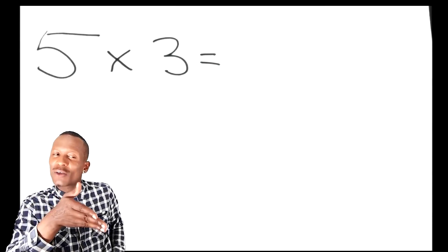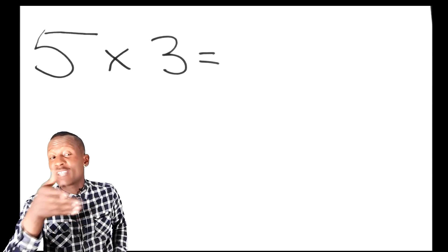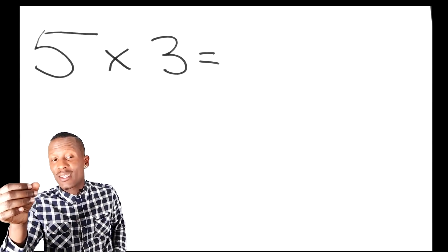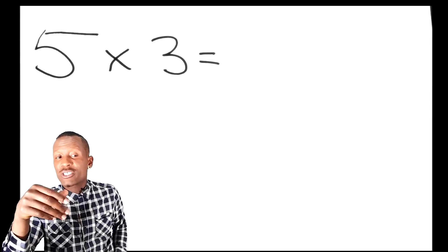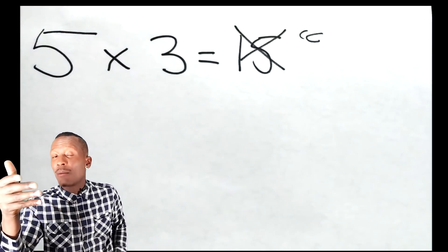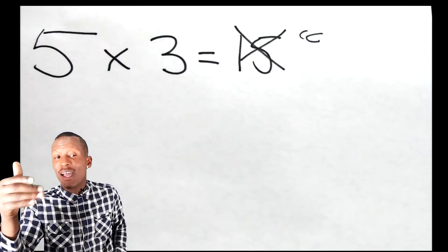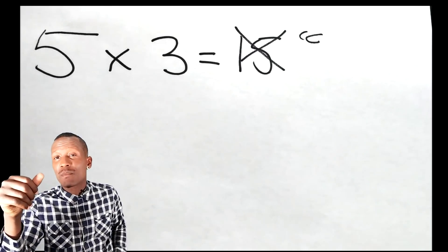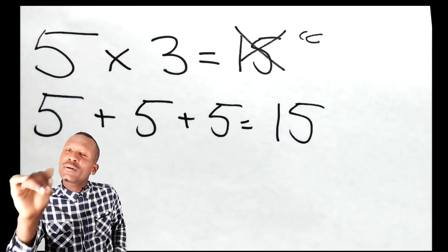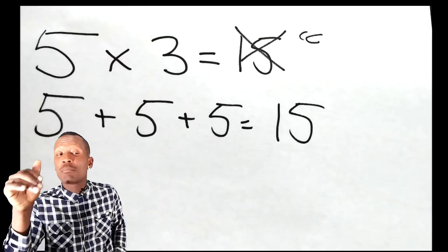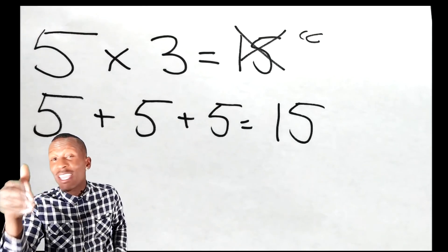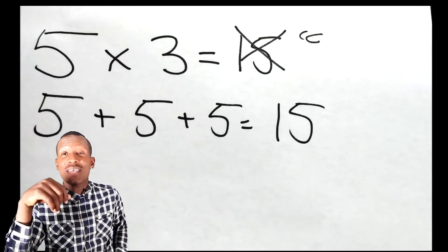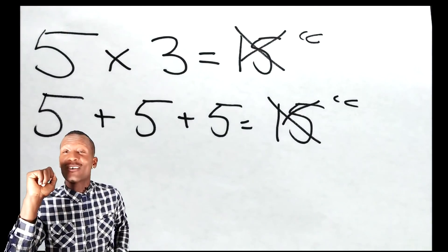So your child was asked to write out and solve five times three. Any normal person would just count by fives three times — five, ten, fifteen — and it would give us fifteen. So your child wrote out five plus five plus five equals fifteen. Common Core said, uh-uh, that's wrong.